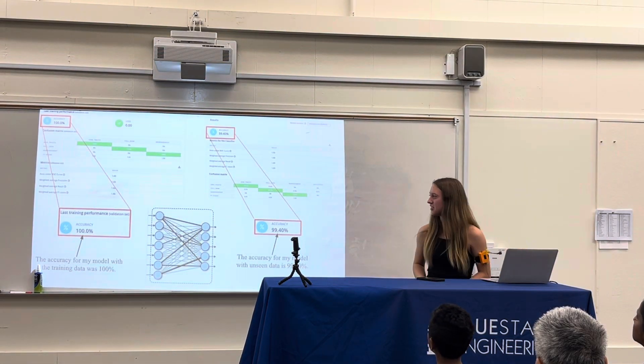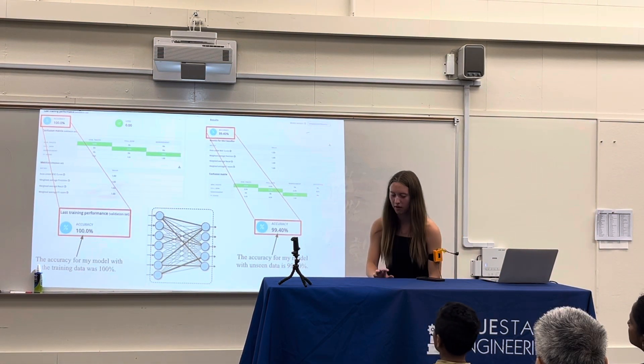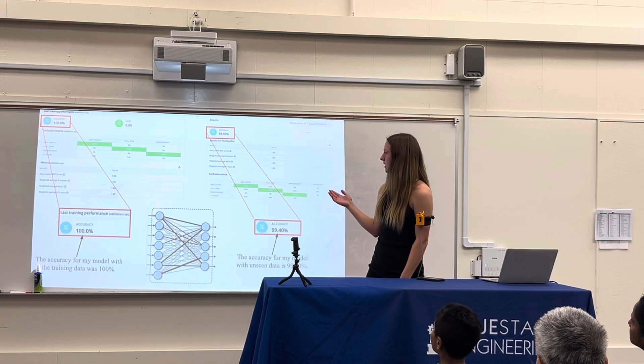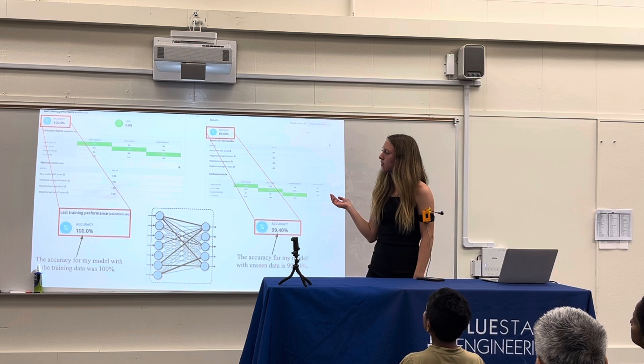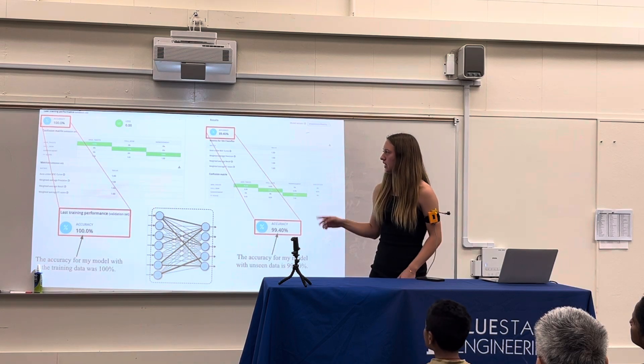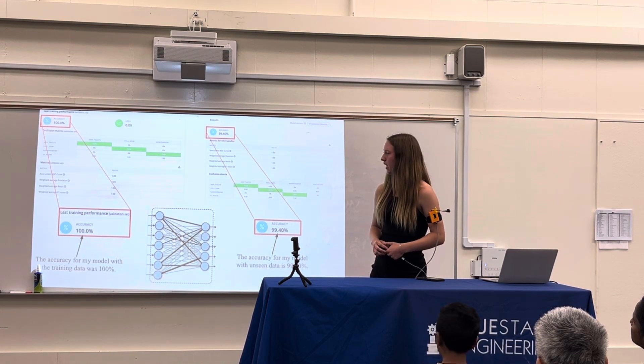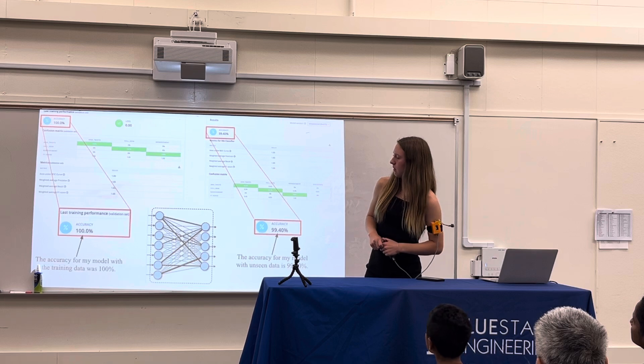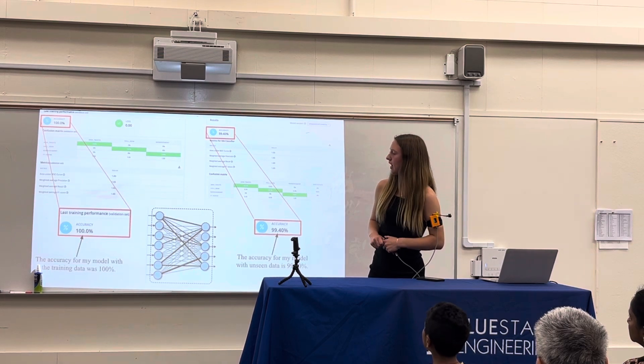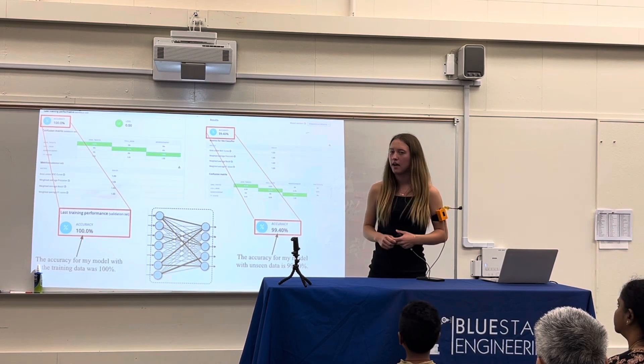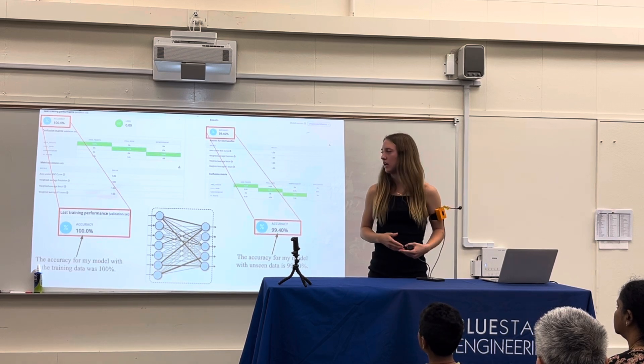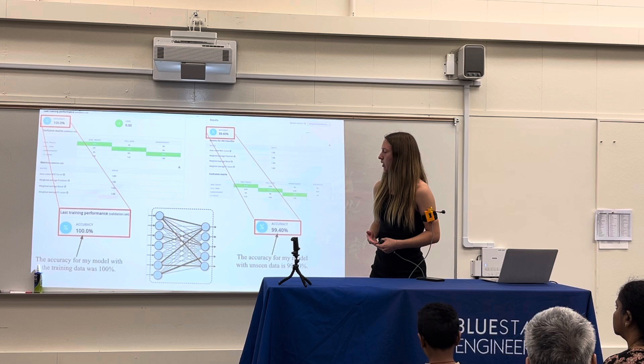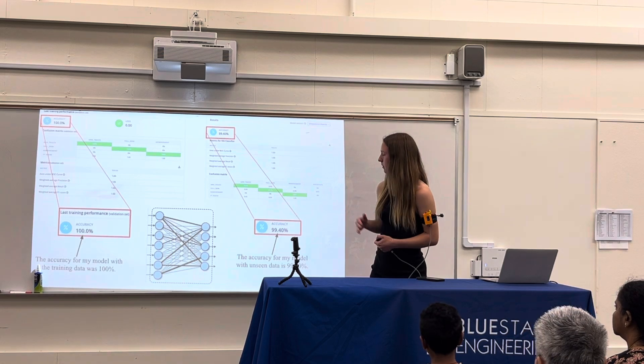So just to be sure, I'm going to show how accurate my model really is. This is the train and test data split from my Edge Impulse, and on the left is an image showing that my train set had 100% accuracy. This is with using data that my machine learning model has used before and has trained with before. So 100% accuracy.